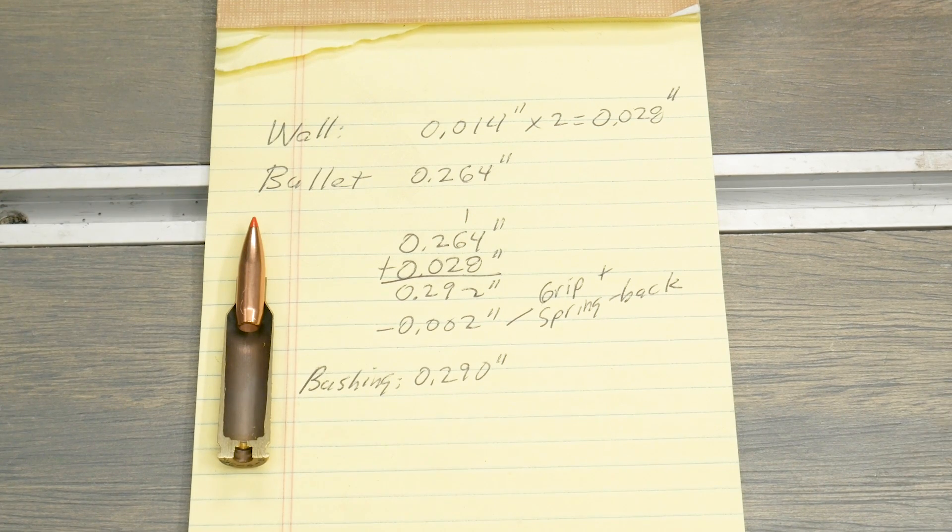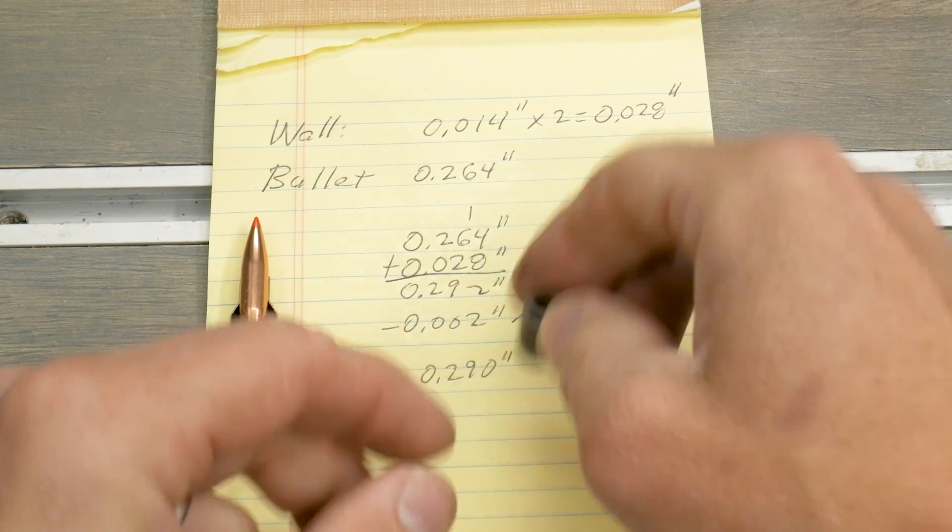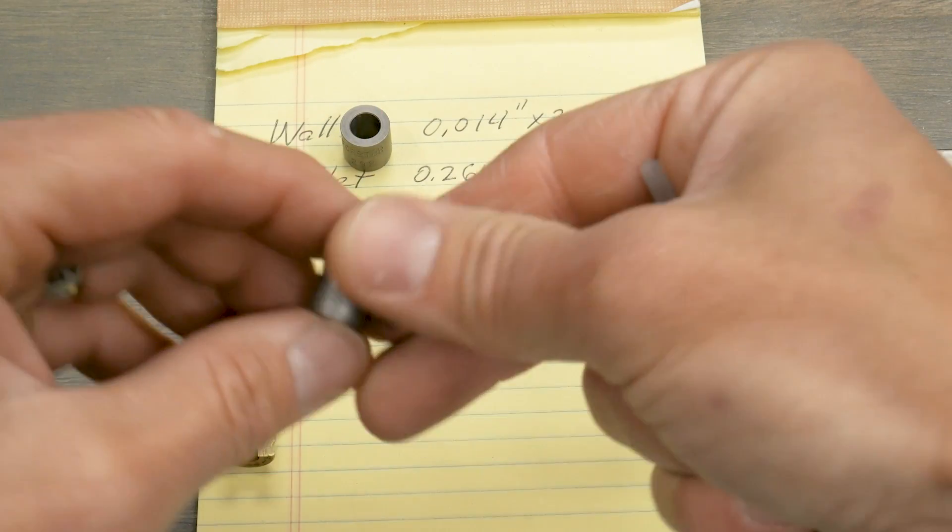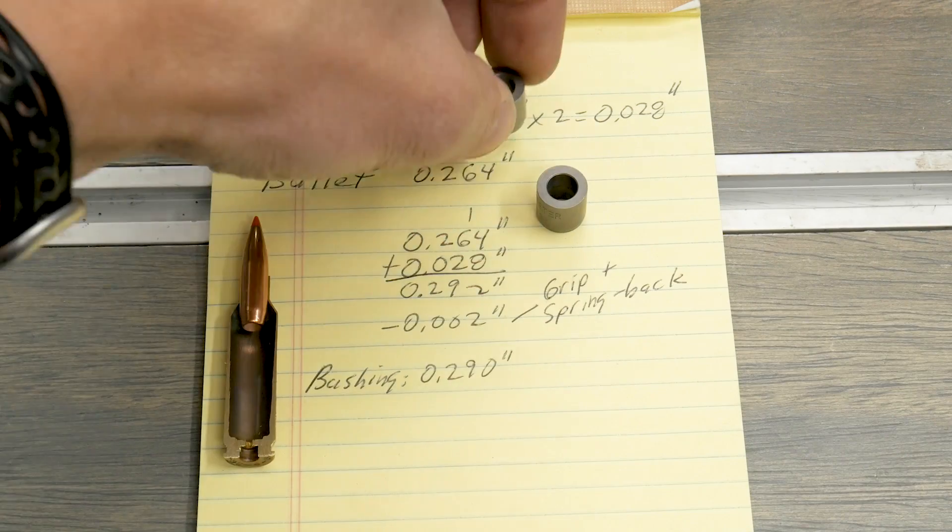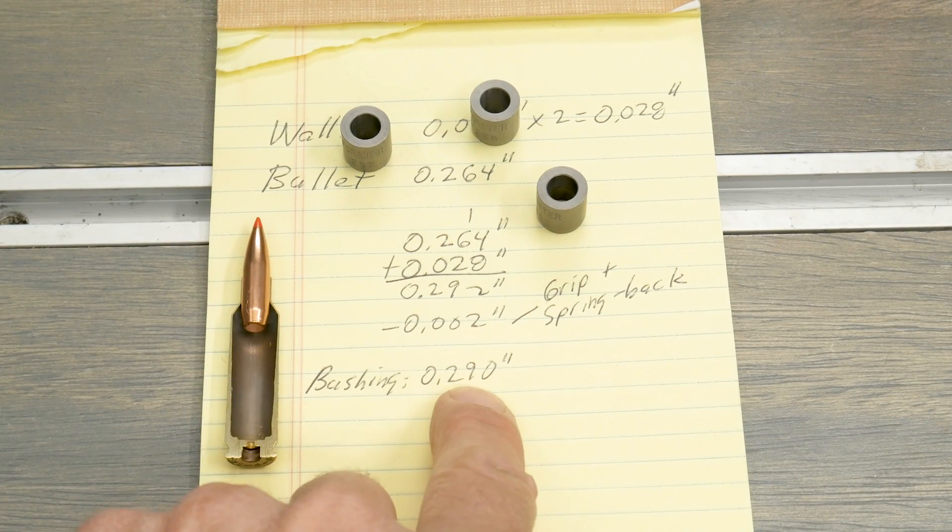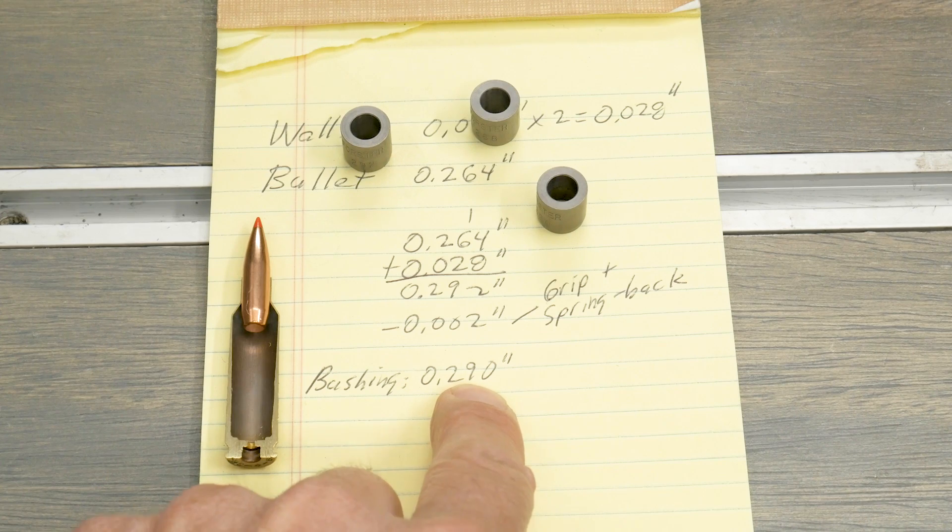The bushings that I have are 290. That's a good sign. I have 292 and I have 288. So I have 2 thousandth increments. We've got 290 right on. So let's install that bushing in the die.